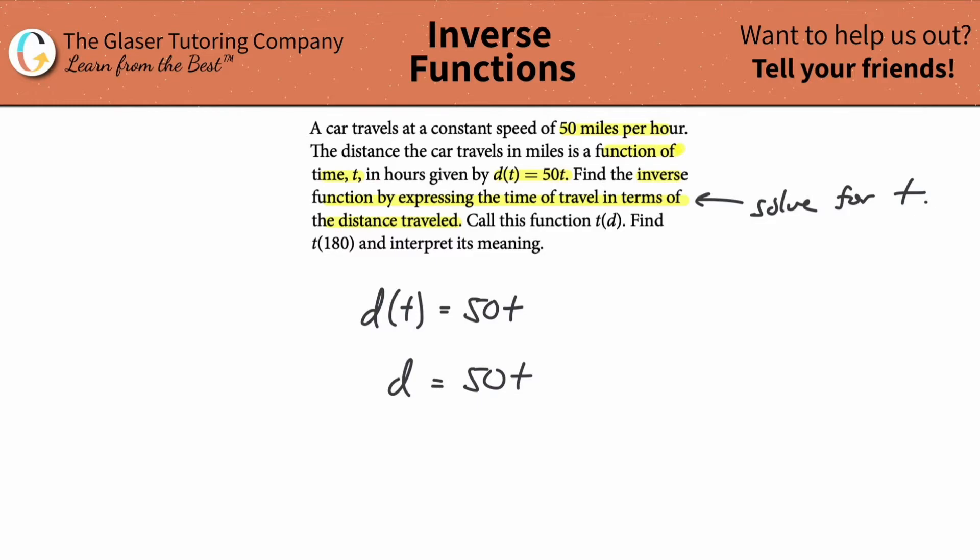That's what it means: solve for t. Isolate t on one side of the equation. So here's the original. In order to find the inverse function, all we're going to do is we're literally going to solve this thing for t. That's it. If you had to solve that equation for t, what would you do?